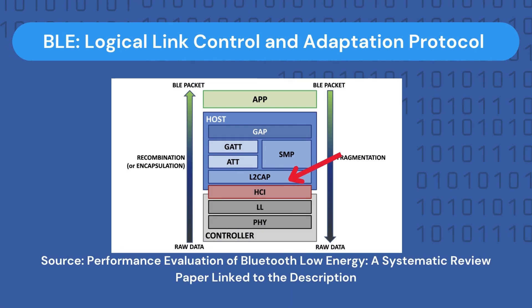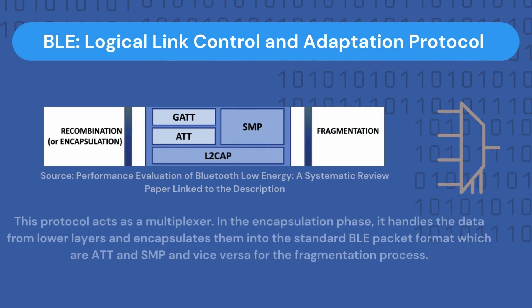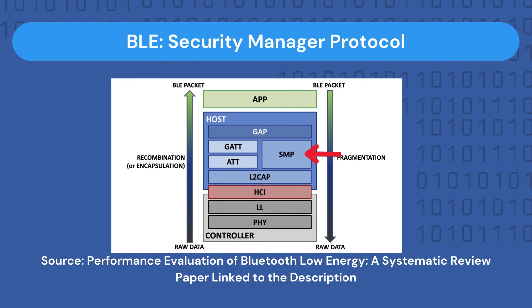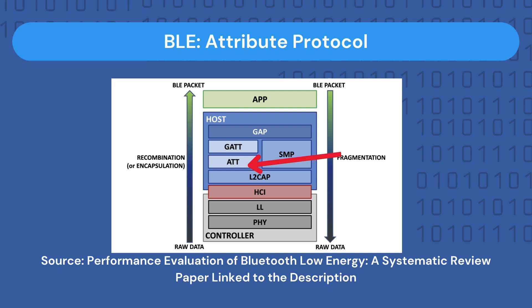The Logical Link Control and Adaptation Protocol layer, or L2CAP layer, acts as a multiplexer which either takes data from lower layers and encapsulates them into a standard BLE packet format, or fragments that standard BLE packet format into data handled at lower layers. Then we have the Security Manager Protocol layer, which is composed of several security algorithms that encrypt and decrypt data packets. We also have the Attribute Protocol layer, which defines how a server exposes its data to clients and how that data is structured into attributes.